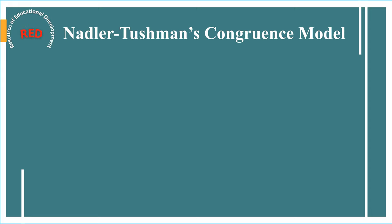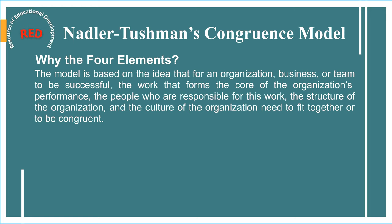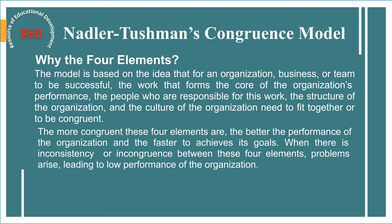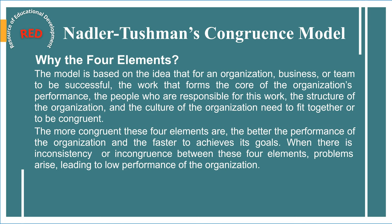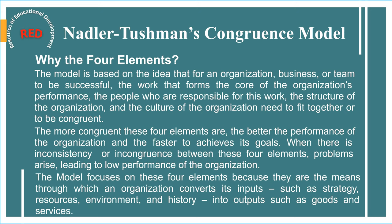Mr. Aziz explains why the four elements are important. The model is based on the idea that for an organization, business, or team to be successful, the work that forms the core of performance, the people responsible for this work, the structure of the organization, and the culture all need to fit together — to be congruent. This is consistent with open systems theory. The more congruent these four elements are, the better the performance and the faster the organization achieves its goals. When there is incongruence, problems arise, leading to low performance. These four elements are the means through which an organization converts inputs — such as strategy, resources, environment, and history — into outputs such as goods and services.